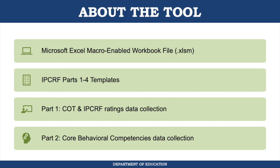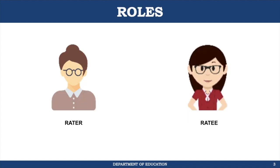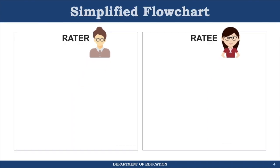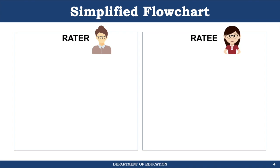So who will be using this tool? There are two types of users: the rater and the ratee. For the purposes of this presentation, I've simplified the flowchart, taking out all the steps that don't necessarily involve the electronic tool while still following the procedures we previously set.